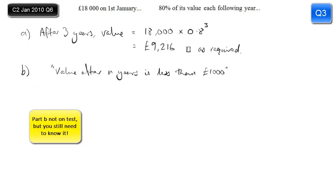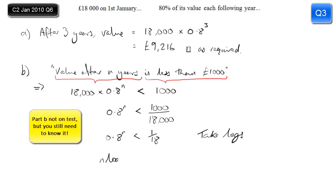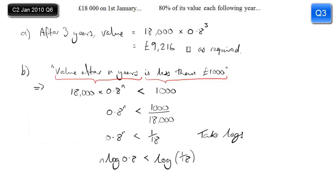For part b, we have the statement: the value after n years is less than one thousand pounds. The value after n years is 18,000 times 0.8 to the power n — like part a but for n years — and we write less than a thousand. Dividing through by 18,000 simplifies to: 0.8 to the power n is less than 1/18th.